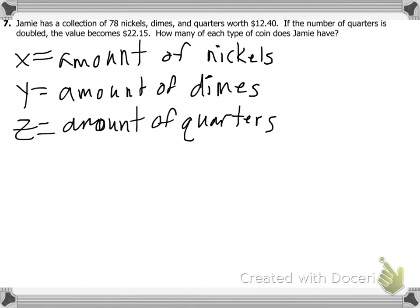Now I need to set up my three equations. Can anyone raise your hand and help me out with one of my equations? X plus Y plus Z equals 78. Because it says Jamie has a collection of 78 nickels, dimes, and quarters. So my amount of nickels plus my amount of dimes plus my amount of quarters equals the total amount, which is 78. Everyone good with that equation?